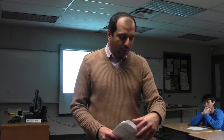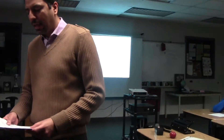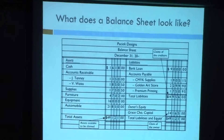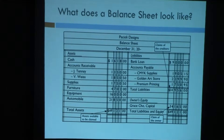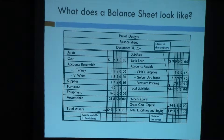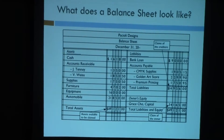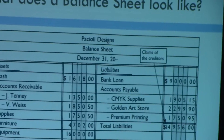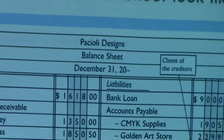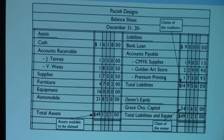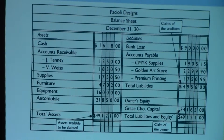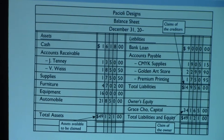Welcome back to accounting. We were talking about balance sheets last time, so we'll continue that discussion. As you can see, I've gone back to a slide with an example of how a balance sheet looks. A balance sheet has a few characteristics: the heading clearly states the name of the company, that it is a balance sheet, and the date. Assets are on one side, liabilities and equities on the other.